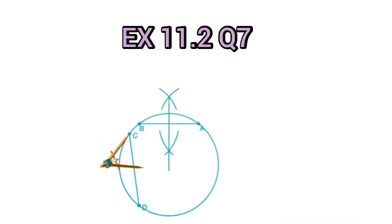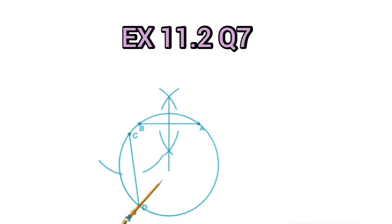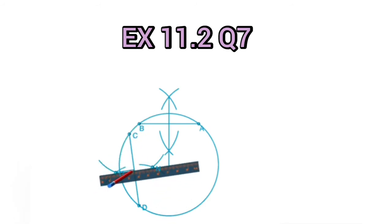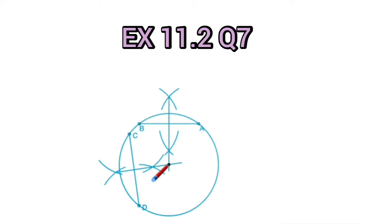Again with the compass, we will take a measure more than half of CD and draw the arcs. Then the perpendicular bisector of line segment CD will be drawn by joining the two points of intersection of the two arcs drawn from C and D respectively — that is point N and point G. Therefore NG is the perpendicular bisector of line segment CD, and we get a point of intersection. This point of intersection of the two perpendicular bisectors of the two non-parallel chords is the center of the circle. We will mark this point as O, O being the center of the circle.